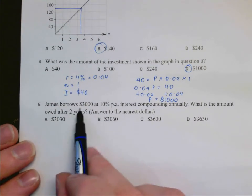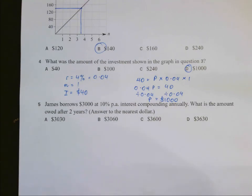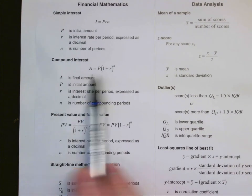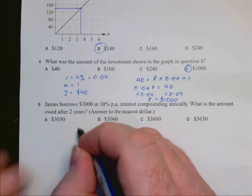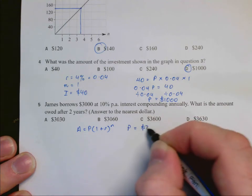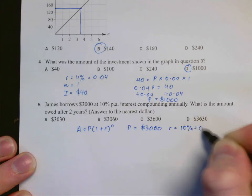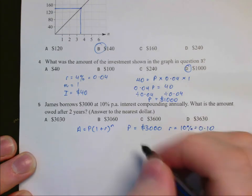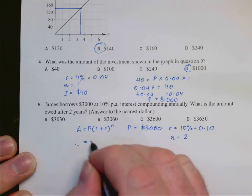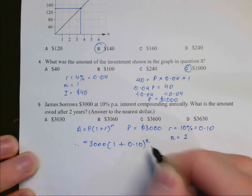Question 5: James borrows $3,000, 10% interest compounding annually. What is the amount owed after two years? Again, we refer to the formula sheet. We have the compound interest formula here. The principal is $3,000, the rate is 10% per annum which as a decimal is 0.1, and the time period is two years.